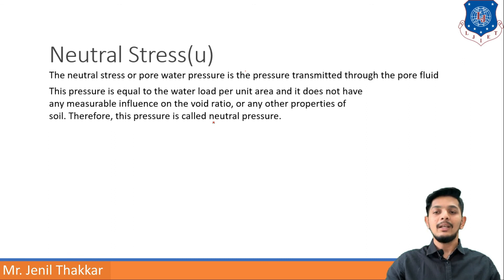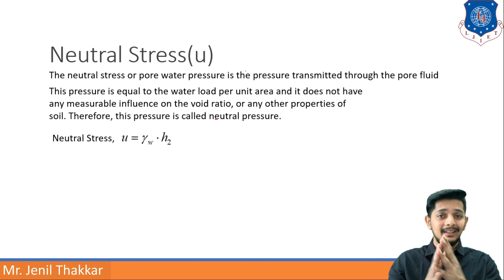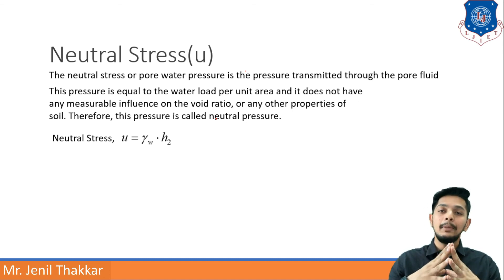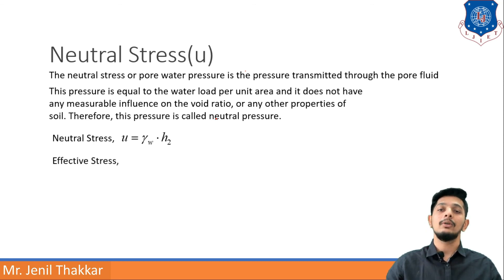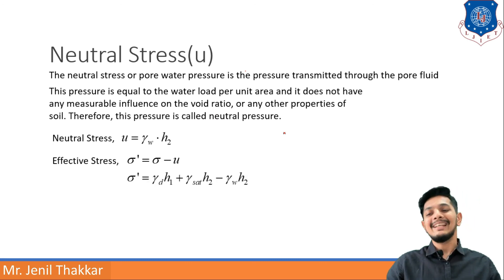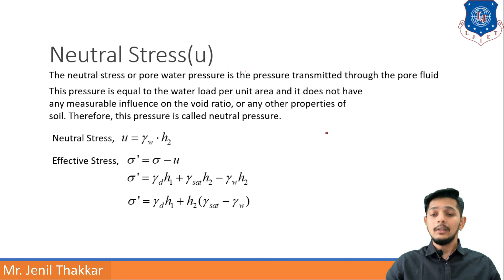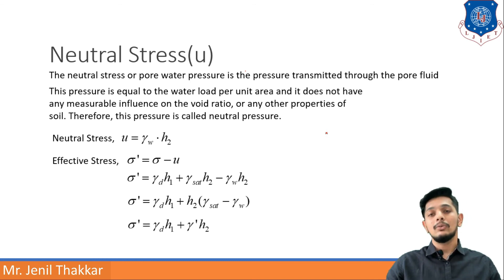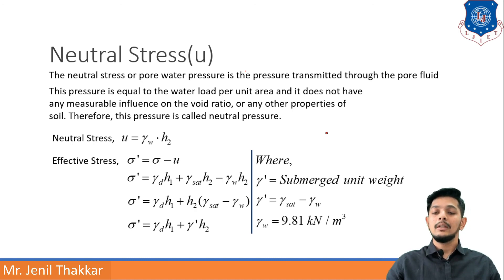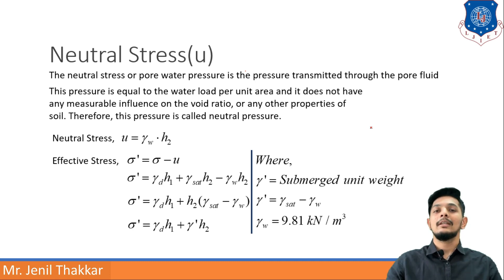Neutral stress u equals gamma_w times h2, where gamma_w is the unit weight of water and h2 is the height up to the water table. Therefore, effective stress sigma-dash equals gamma_d·h1 plus gamma_sat·h2 minus gamma_w·h2. Taking h2 as common: sigma-dash equals gamma_d·h1 plus h2·(gamma_sat minus gamma_w), which equals gamma_d·h1 plus gamma-dash·h2, where gamma-dash is the submerged unit weight equal to gamma_sat minus gamma_w.